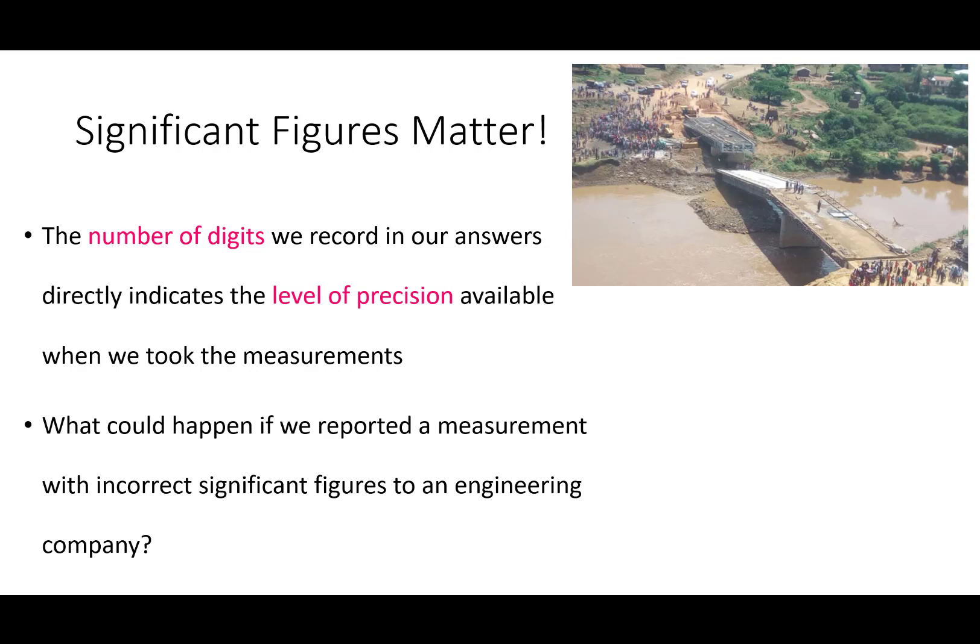The question posed is, what could happen if we reported a measurement with incorrect significant figures to an engineering company? That actually happened. I believe this is in, was it China or Kenya? Well, one of those two countries. Significant digits were off. And when the bridge was constructed, the middle piece did not fit. And so it collapsed.